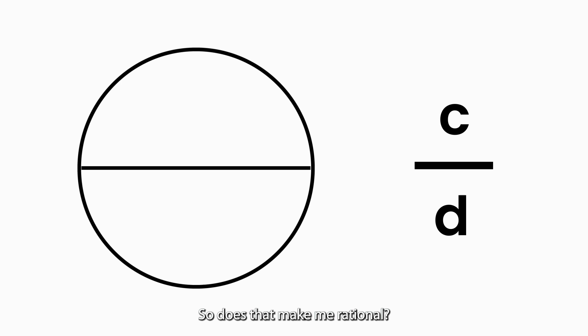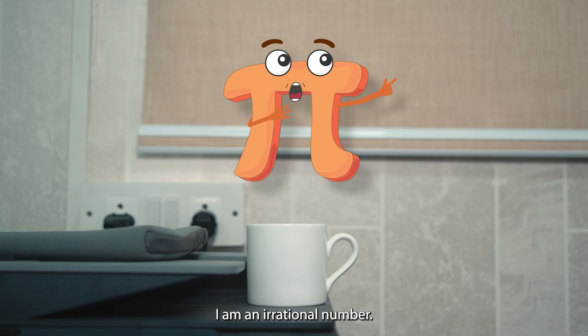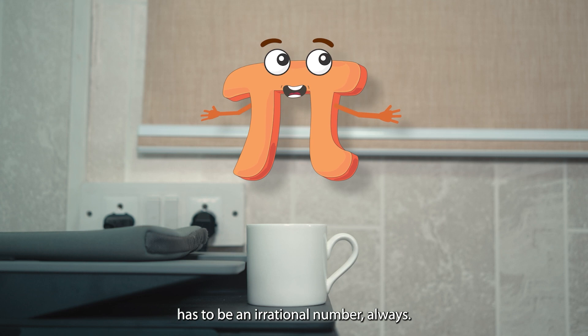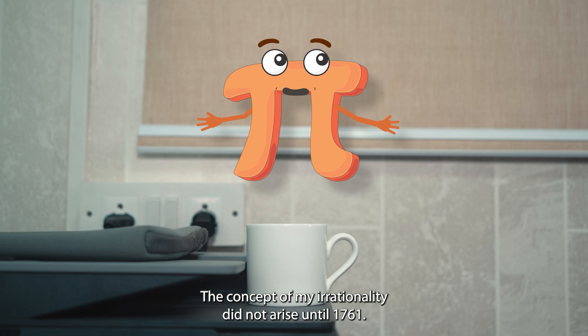I am an irrational number. That means either the circumference or the diameter of a circle has to be an irrational number always. The concept of my irrationality did not arise until 1761.